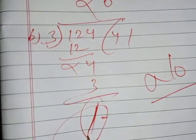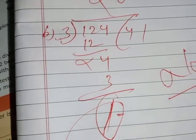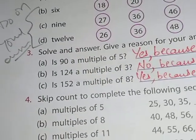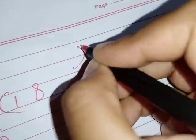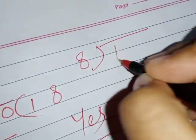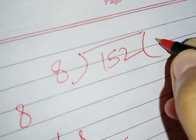For c, 152, multiple of 8. What we have to do? Divide. I mean, divide 152 by 8. So we know that 8 ones are 8.